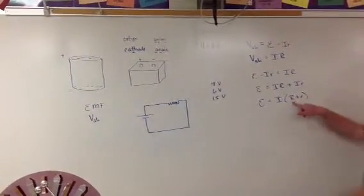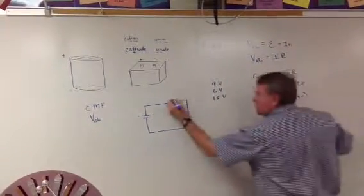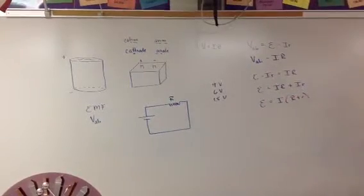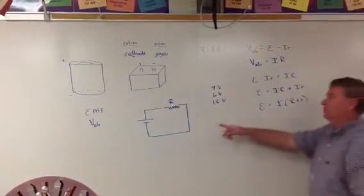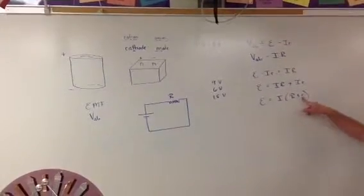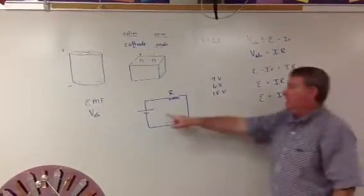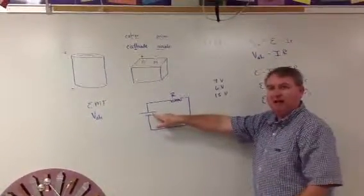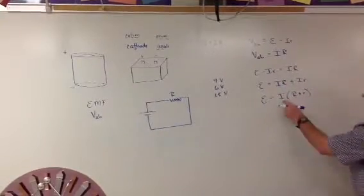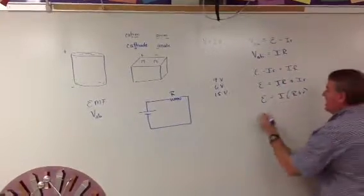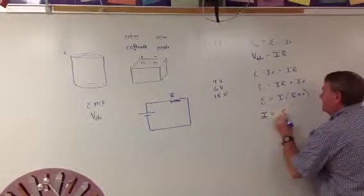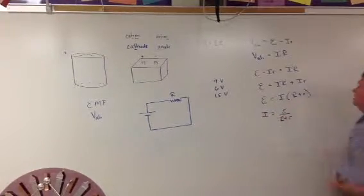This capital R is the resistor — it could be a light bulb or a toaster, anything causing resistance or load in the circuit. And this lowercase r is the internal resistance caused by the chemicals inside the battery. Solving for I, current I is equal to E divided by R plus r.